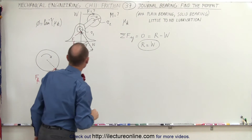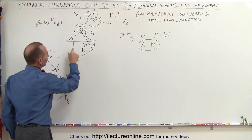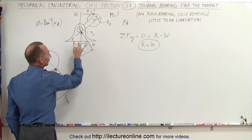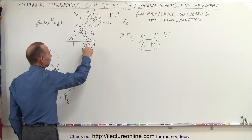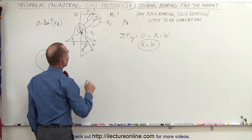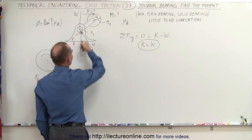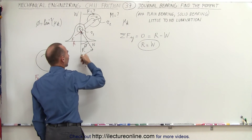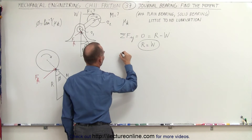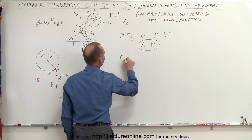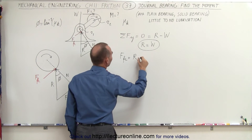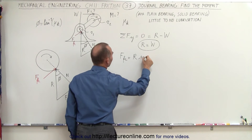Next, we derive an equation for the friction force relative to the reaction force and the angle phi. Since the reaction force R is the hypotenuse of a right triangle, the friction force equals the reaction force times the sine of the angle phi: F_friction = R × sin(φ).